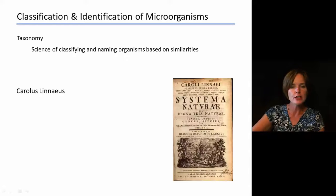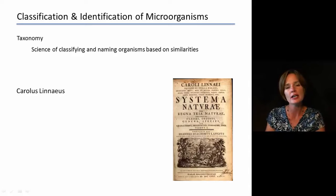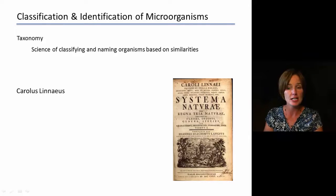This science has been around for a little while. This was initially established by Carolus Linnaeus, and he published his system of classification in his book, which we call Systema Naturae.